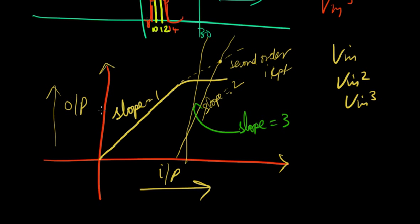So suppose the output increased with the input linearly, as shown by this dotted line. The place at which this slope equals 2 line intersects that line is called the second order intercept point. Okay, ICPT is intercept.